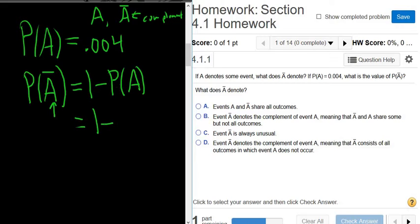So this is 1 minus, then you just plug in the 0.004, and so you get 0.996.